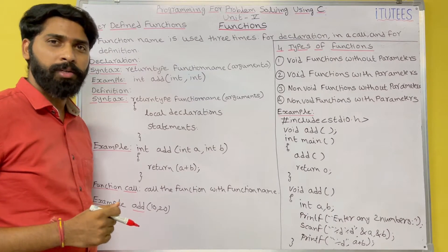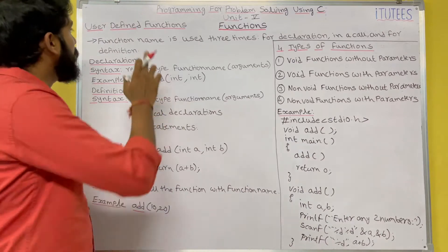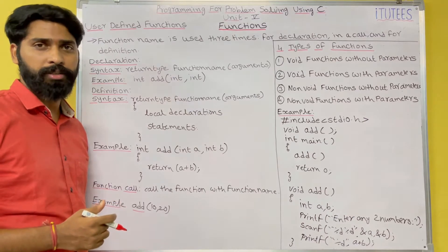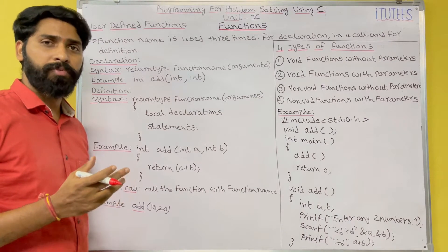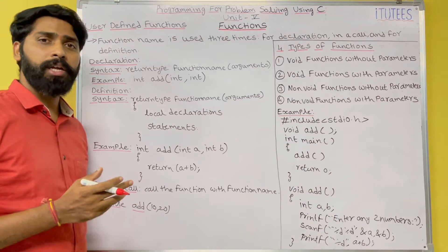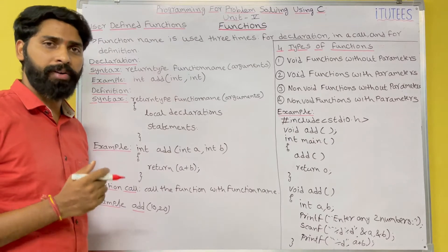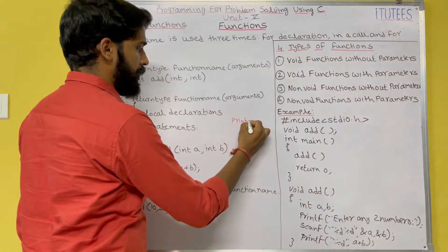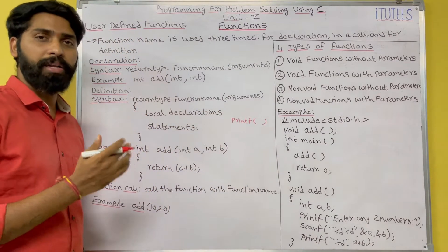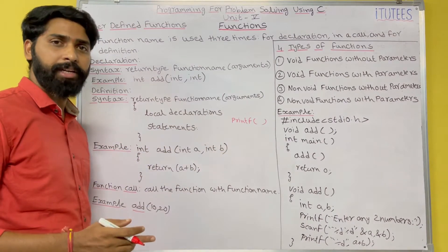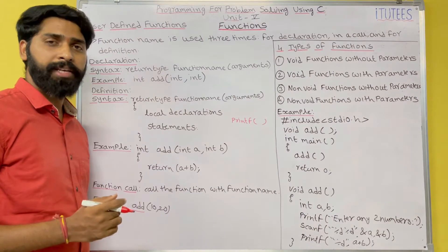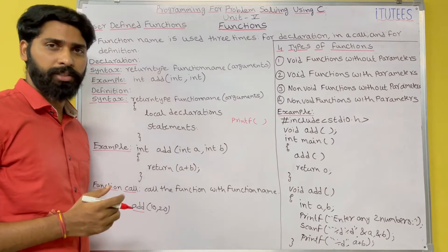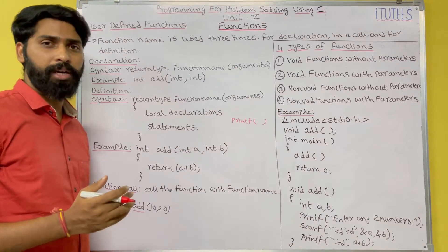Hello friends, welcome to C Programming Tutorials. In this class we are going to learn about user defined functions. In our previous class we learned about functions. A function is a set of instructions to accomplish a task. There are two types of functions: predefined functions and user defined functions. For example, printf is a predefined function — it is defined by the creator of C Programming. The next category is user defined functions, meaning the user can define the functions.